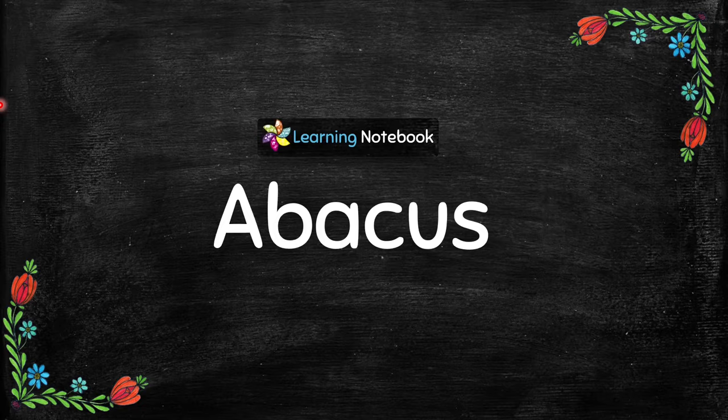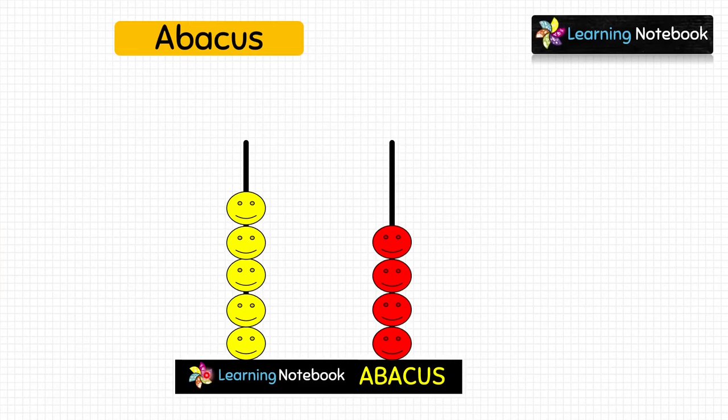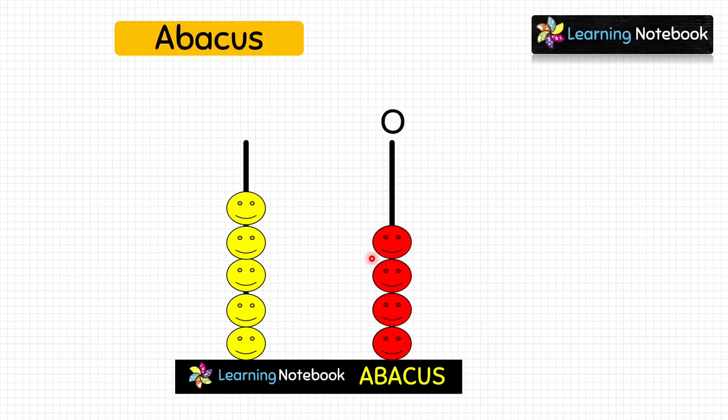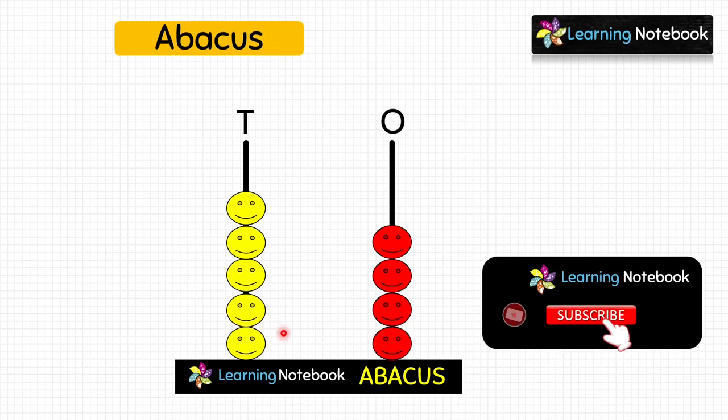Let's start and first understand what is an abacus. Students, look at the abacus shown here — it has two spikes. The beads in the right-hand spike show digits at the ones place, and the beads in the left-hand spike show digits at the tens place. So this is an abacus.